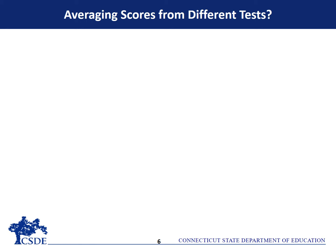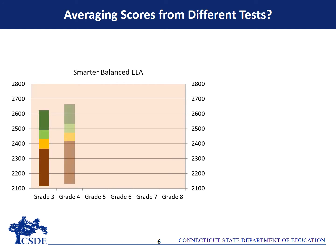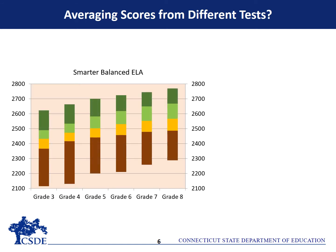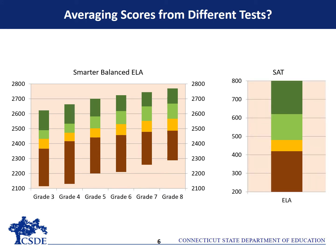But how do you calculate an average using scores from different tests? Don't these tests have different types of scores? Yes, different tests do have different scales for reporting their scores. The Smarter Balanced ELA scale range is different for each grade — actual scores range from a low of around 2100 in 3rd grade to a high of around 2800 in grade 8. The SAT ELA scale ranges from 200 to 800, and the Connecticut Alternate Assessment scale ranges from 1200 to 1290.